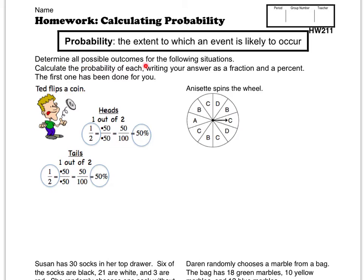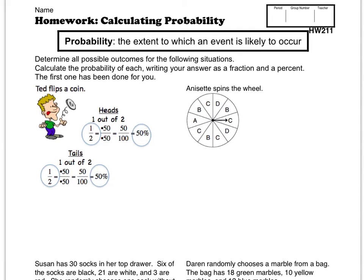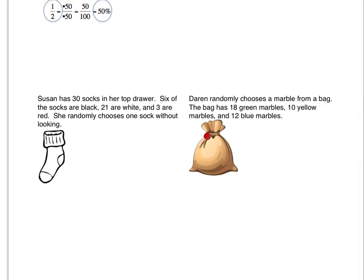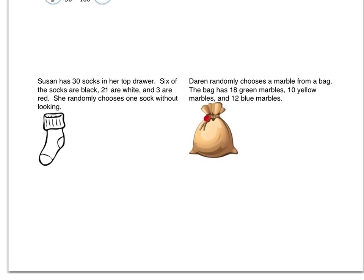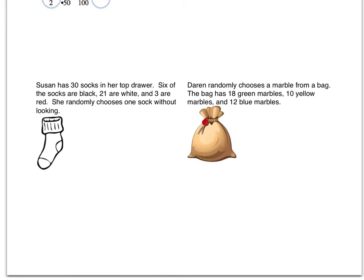Determine all possible outcomes for the following situations. Then calculate the probability of each, writing your answer as a fraction and a percent. The first one has been done for you. So let's go ahead and do the socks. That one looks like it might be a little tougher.